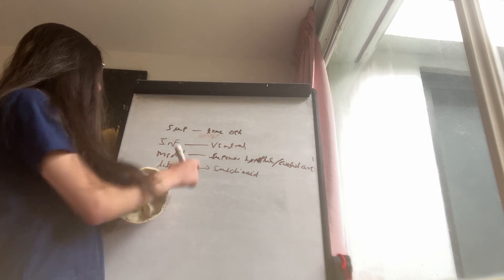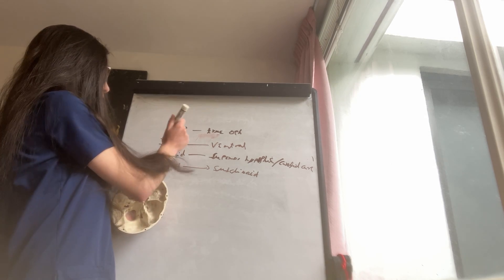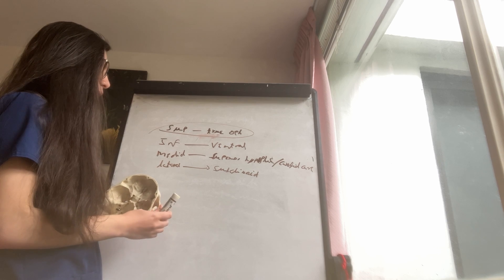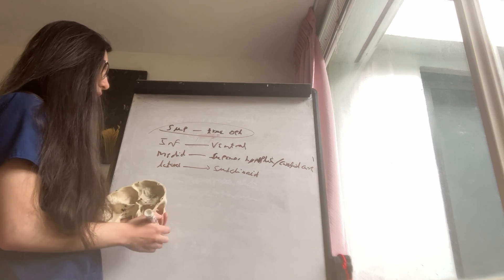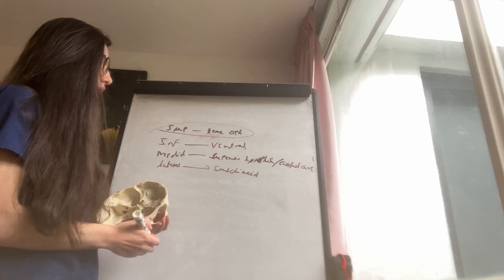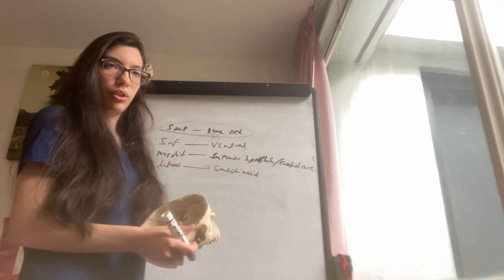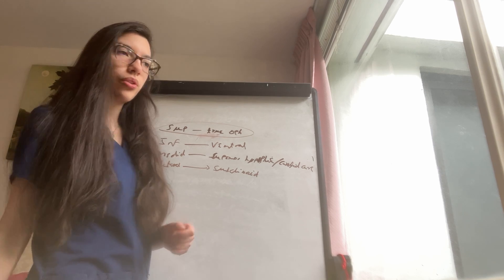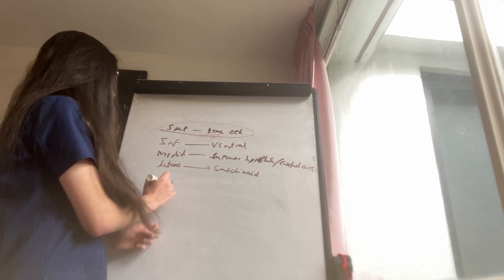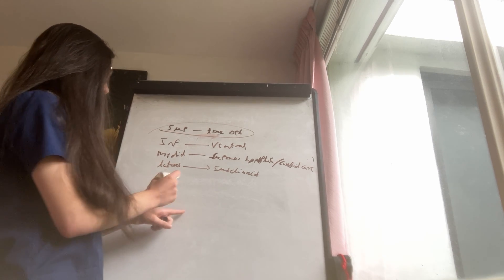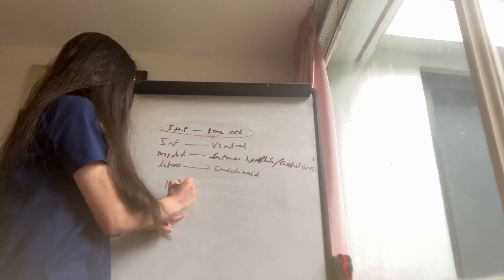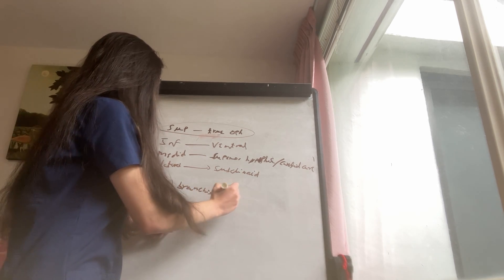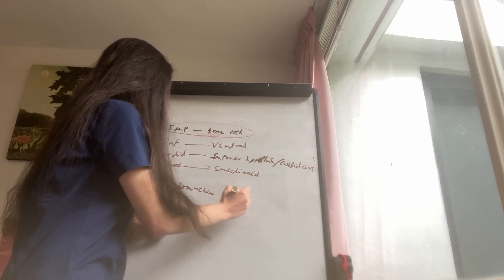The most common is the superior, or true ophthalmic paraclinoid aneurysm. Aneurysms usually follow four principles from Rhoton. The first is that the aneurysm occurs at a branching point.